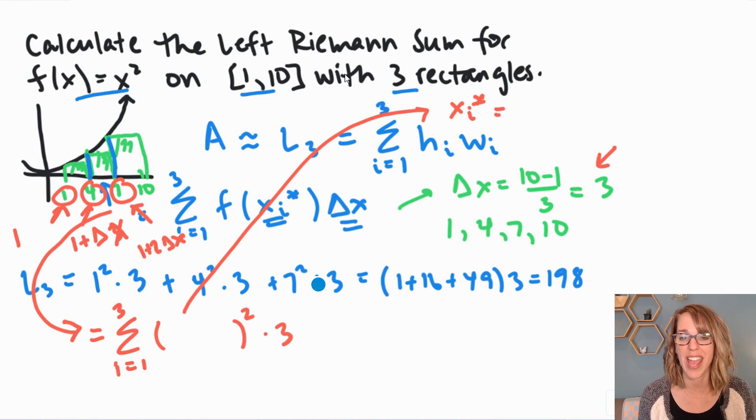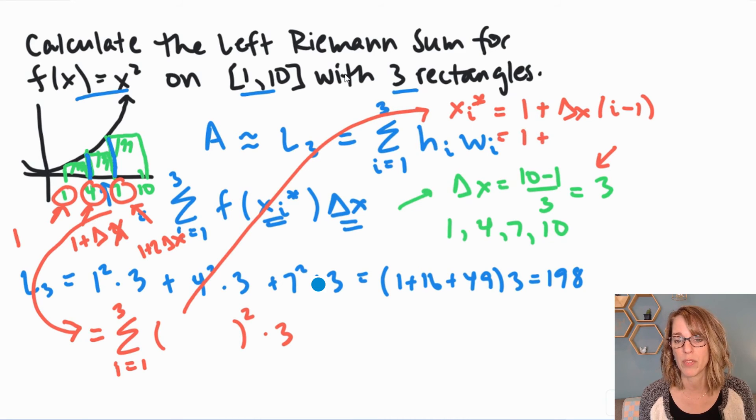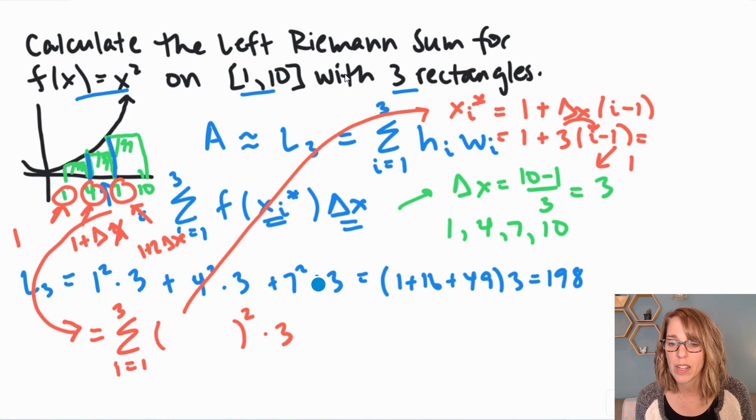So that tells me that I really want to add delta x's, but one less. So I'm going to go 1 plus delta x times i minus 1, and that's going to work out perfectly. Delta x is 3. So in terms of our problem, that's 1 plus 3 times i minus 1. If I do the math to simplify this and distribute that 3, I end up with 1 plus 3i minus 3, which is going to be 3i minus 2.